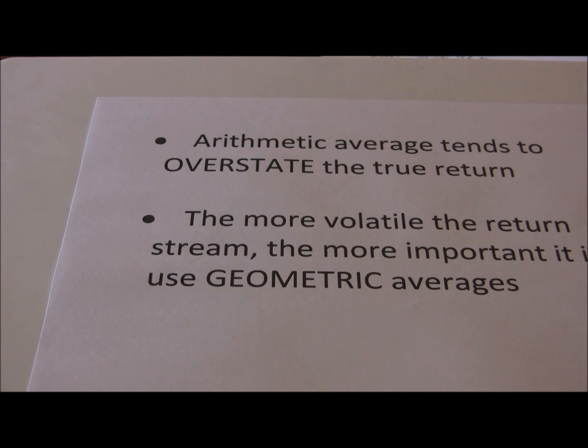So just a quick recap. Arithmetic averages tend to overstate the true return. And the more volatile the return stream, the more important it is to use geometric averages. We can see that when we look at our example.